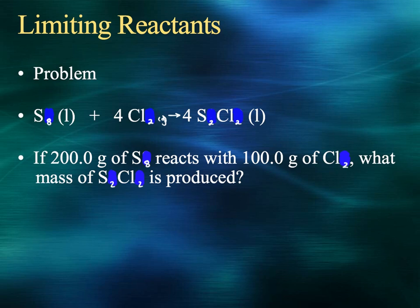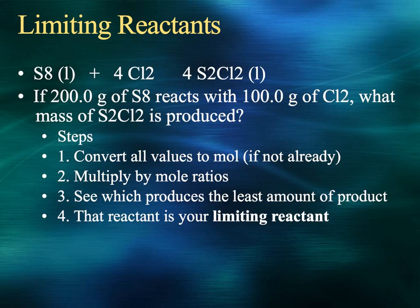Sample problem: S8 + 4Cl2 → 4S2Cl2. If 200.0 grams of S8 reacts with 100.0 grams of Cl2, what mass of S2Cl2 is produced? The strategy: first, convert all values to moles. Second, multiply by mole ratios to get to the product. Third, see which reactant produces the least amount of product — that reactant is your limiting reactant.